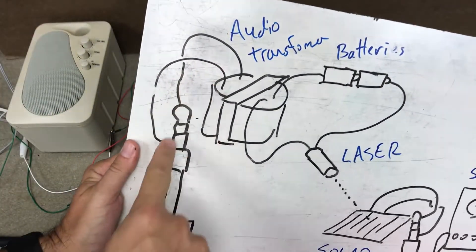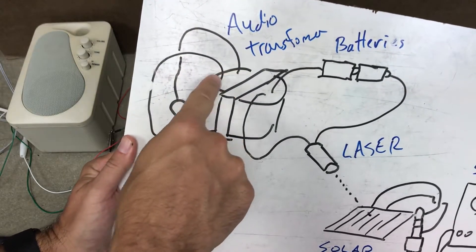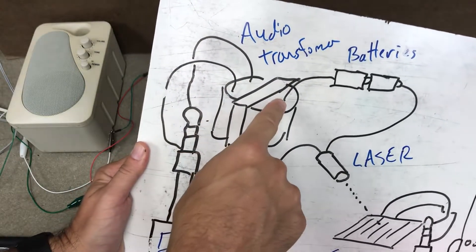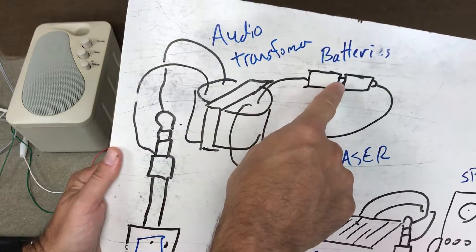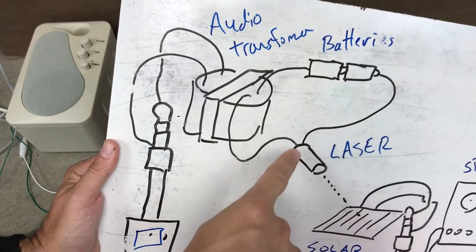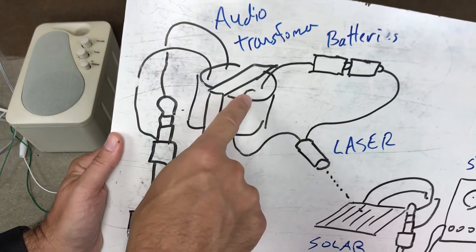When the music changes the current in this side of the transformer, it changes the current on that side too. This side is hooked up to the batteries for the laser, which I've taken out, then goes to the laser, and back to the transformer.